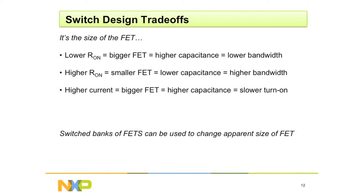The best way to remember it is that inside, there's a single device called a FET, no matter what the device is doing. For lower resistance through the device, you want a bigger FET. But a bigger FET, because it is a bigger physical device, has higher capacitance. Higher capacitance means lower bandwidth — less frequency that it can handle. A higher RDS(on), a higher resistance, means you can have a smaller FET, which is lower capacitance, which gives a higher bandwidth.